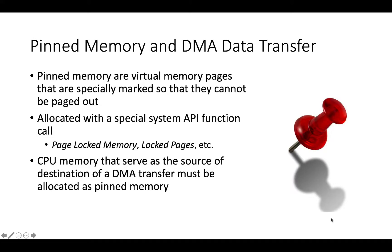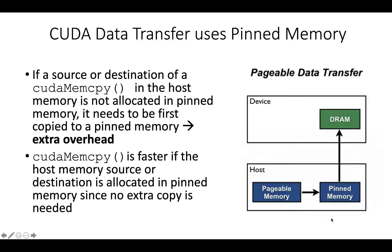Pinned memory pages are virtual memory pages that are specially marked so they cannot be paged out. They are allocated by special system API function calls. The important point for us is that CPU memory that serves as the source or destination of a DMA transfer must be allocated as pinned memory. If the source or destination of a CUDA memcpy in the host memory is not allocated as pinned memory, it needs to be first copied to a pinned memory, and this causes extra overhead. When we allocate pinned memory directly, we can avoid this extra step and extra overhead. Therefore, CUDA memcpy is faster if the host memory source or destination is allocated in pinned memory, since no extra copy is needed.